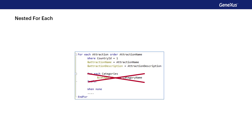The attributes of the when none clause are never taken into account. All attributes must belong to the extended table of the base table found, which matches the base table associated with the base transaction. The attributes that don't meet this condition will not be instantiable because they can't be reached.